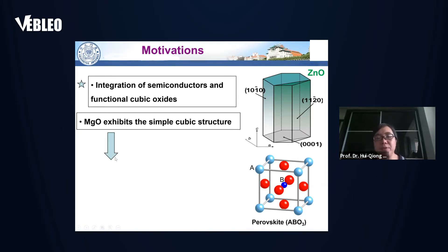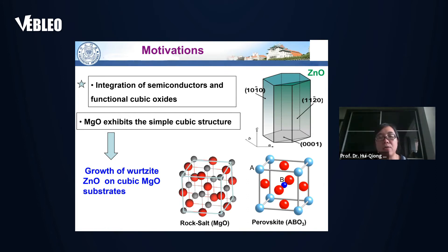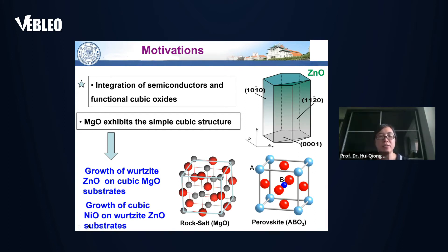Our first project is to use cubic magnesium oxide to grow the hexagonal zinc oxide, and we were actually able to tune the growth orientations of the zinc oxide, which I will share with you. Later, we also conducted another project — the inverse case — where we use hexagonal zinc oxide as the substrate to grow a cubic functional oxide, for example, nickel oxide.